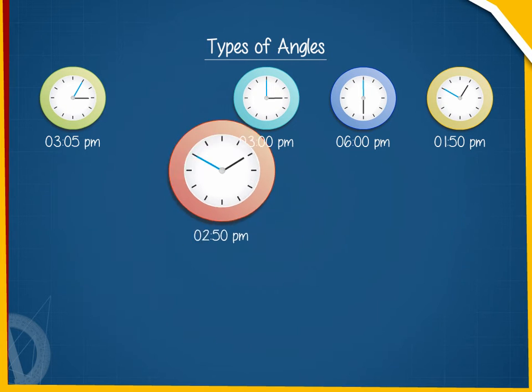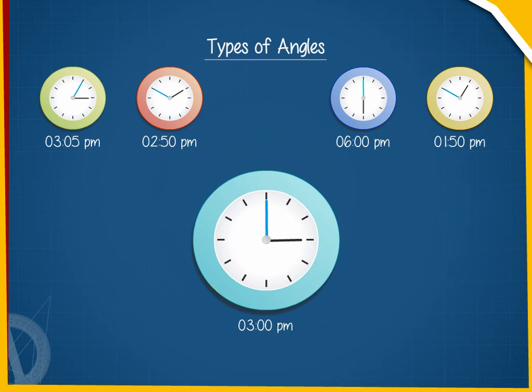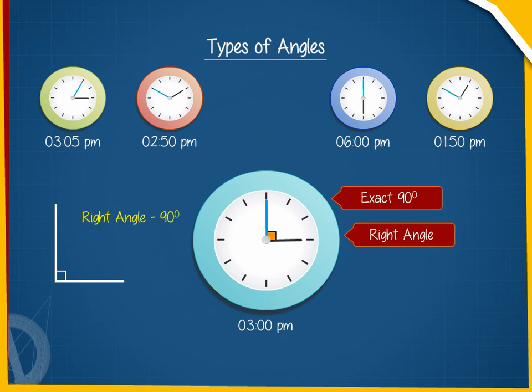At 3 o'clock, the clock makes an angle of exactly 90 degrees. That is called a right angle.